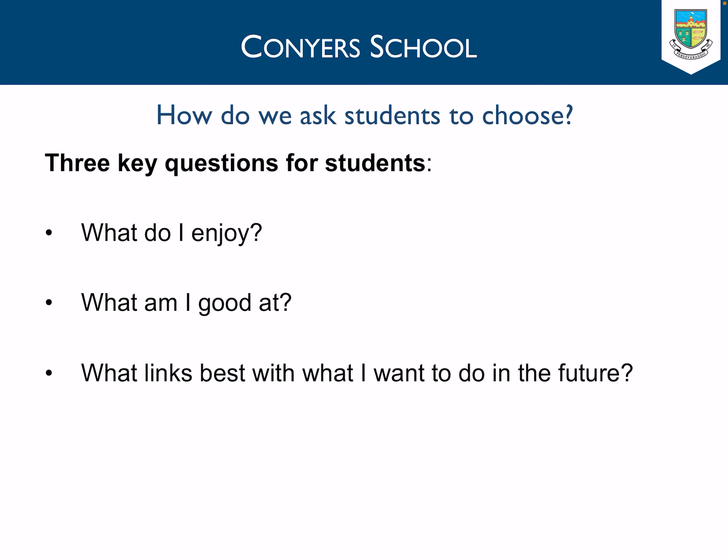In terms of the advice we give to students about choosing their options, we ask them to consider three things: what do they enjoy, what are they good at, and what links best with what they want to do in the future? If students choose a subject they enjoy, they're far more likely to succeed. Students can use their most recent monitoring reports, sent out on the 26th of January, to reflect on subjects they do well in — for example, where they achieve lots of ones and twos or high steps. Not all students will know what they want to do in the future, and that is absolutely fine, but if they do, they can consider which subjects will help them along their pathway. Students can also get advice from their tutor or teachers on the best route to their future.